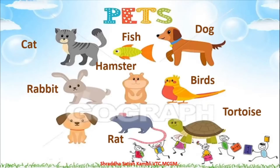Now let me give you a small assignment: apart from these animals, think about some other animal which people can keep as pets, and try to find out the answer. So that was about pets. This particular poem that we have today is about a pet, and that pet is a pussycat.